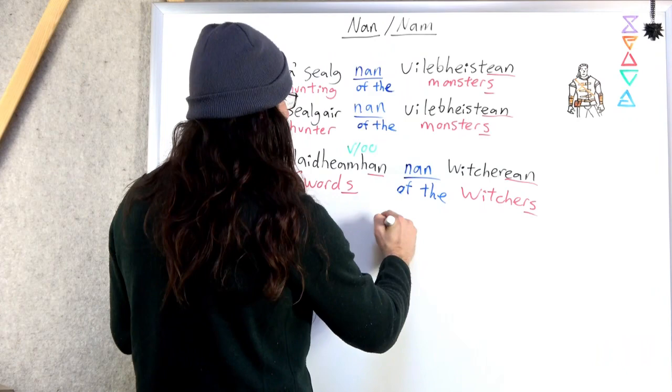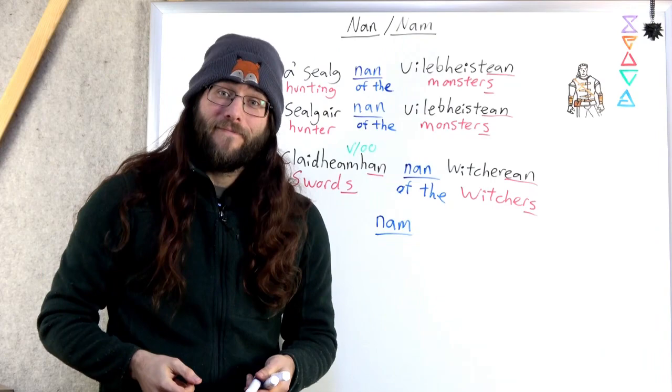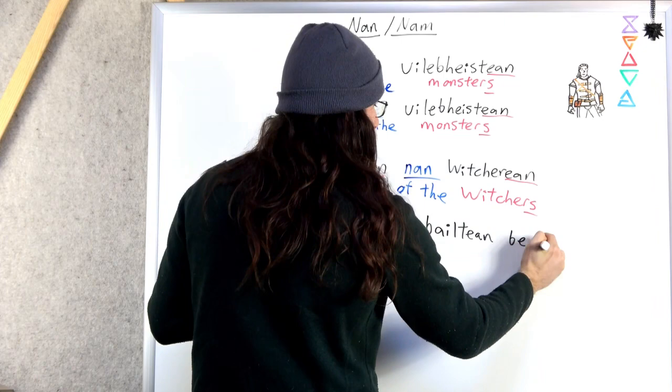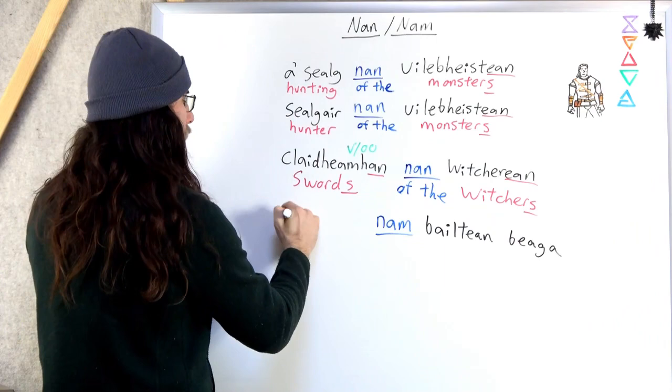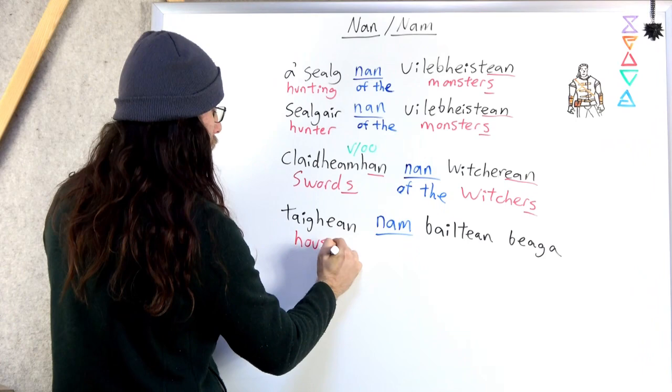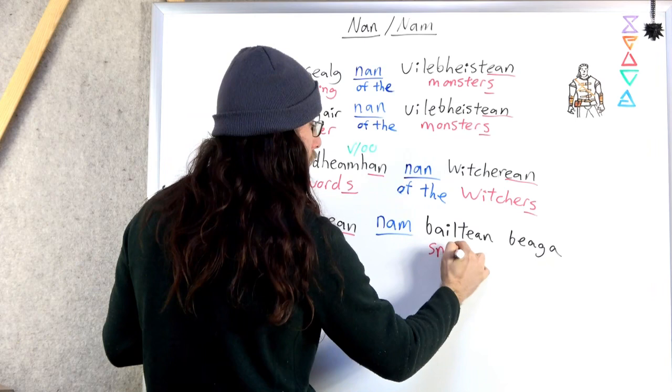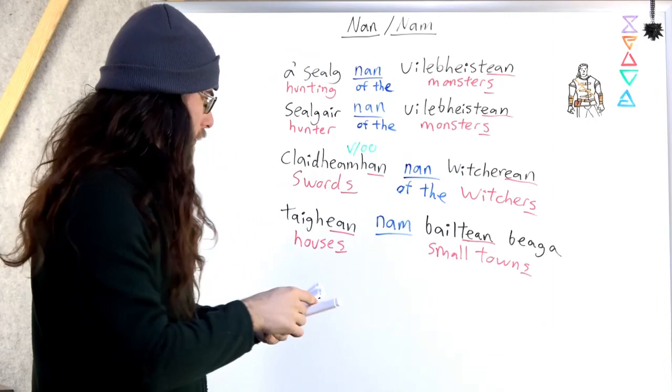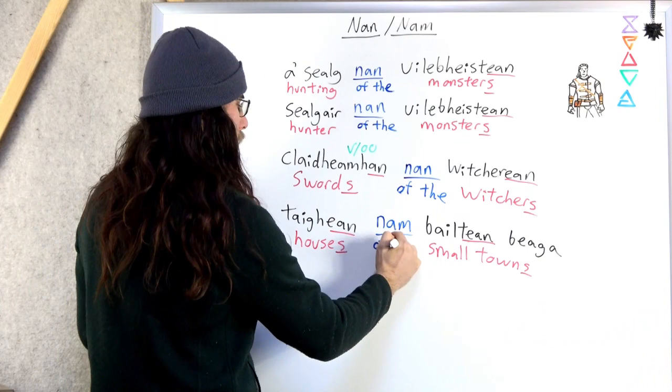What about nam, though? Nam is going to come up occasionally. What the heck is this nam? It's actually just nan. It's changed a little bit. So here's an example. Houses. Small towns or villages. Whichever works best for you.